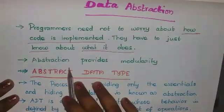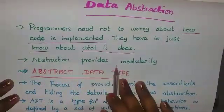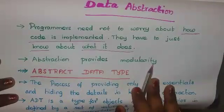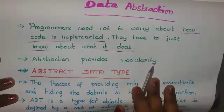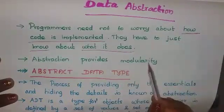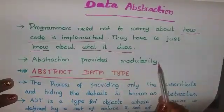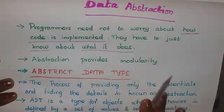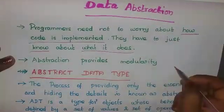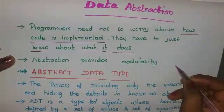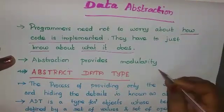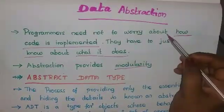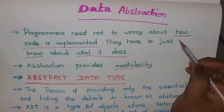Abstraction provides modularity. Modularity means splitting a program into many modules. The program can be split into many modules — that is modularity. Let us see one real-time example to understand data abstraction better.